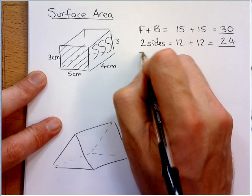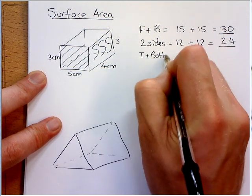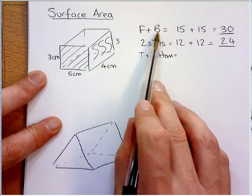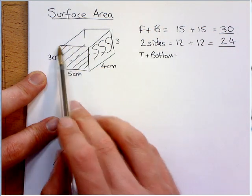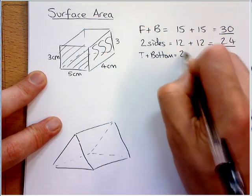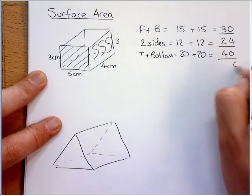And if we do the top and the bottom. I'm going to write bottom because I've already written back there. So, it looks a bit weird. So, the top is 5 times 4. So, that's 20 plus another 20. And that is 40. If you add these up, we get 94.